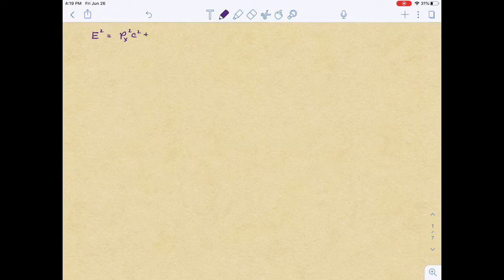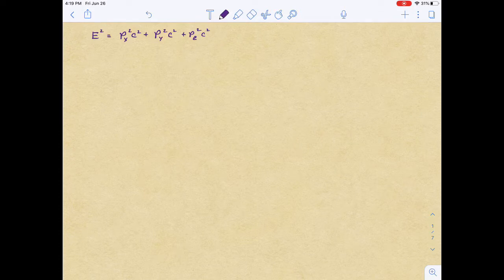E squared is equal to px squared c squared plus py squared c squared plus pz squared c squared plus m squared c to the fourth. Now we can look into a case where the particle is moving in the z-axis, or this is the beam axis moving.